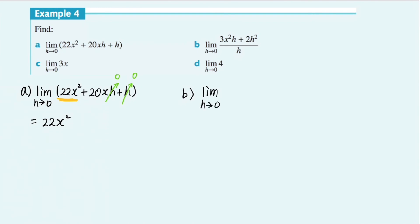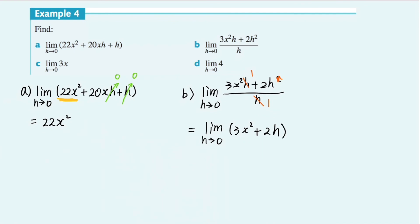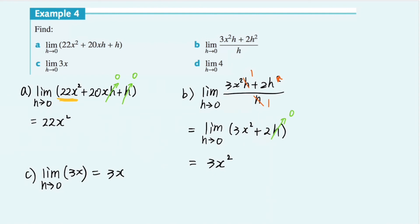Question b: find the limit of (3x²h + 2xh²)/h as h approaches zero. If h goes to zero, the denominator becomes zero, which would be undefined. So we simplify first — h is a common factor in the numerator: dividing gives 3x² + 2h. Now as h approaches zero, we're left with 3x² only. Question c: the limit of 3x as h approaches zero is simply 3x, because there is no term containing h, so h approaching zero has no effect on this expression.